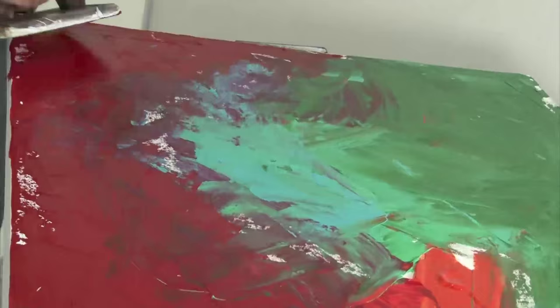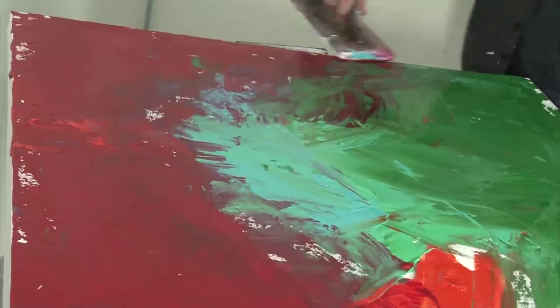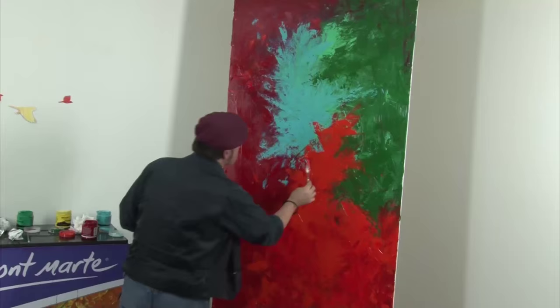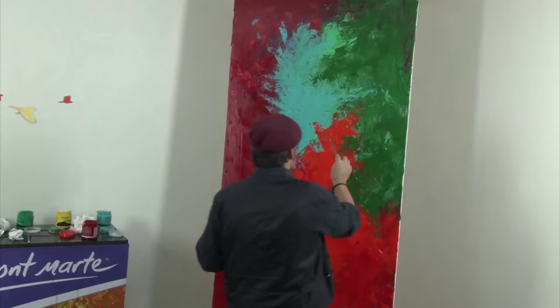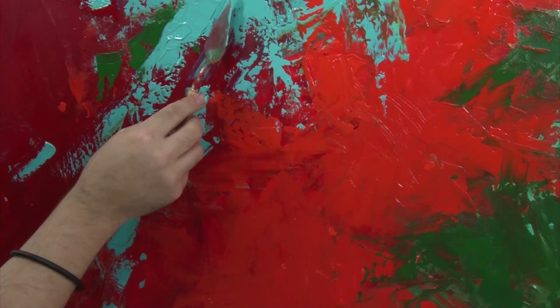Drag that paint around until you're happy and avoid undue contamination by running your float under the water. Because Dimension Acrylic has additives to speed the drying, I give it a bit of a spray to control this and keep the paint workable.